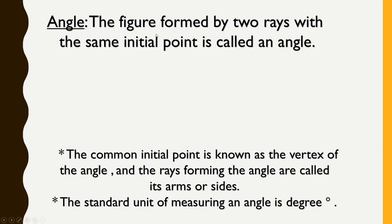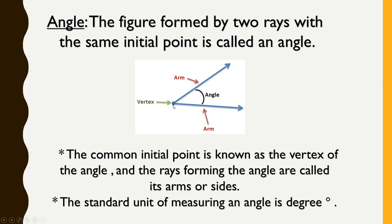Definition of angle: The figure formed by two rays with the same initial point is called an angle. Initial point means starting point — these two rays are starting from the same point. The common initial point is known as the vertex of the angle, and the rays forming the angle are called its arms or sides.